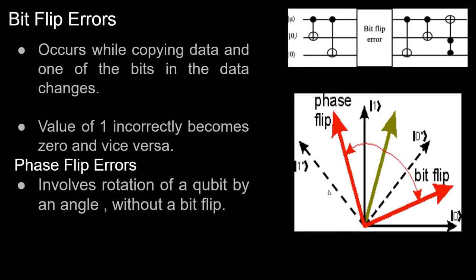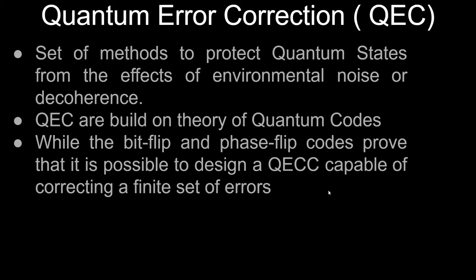The major limitation of my project is that it only works for single qubit errors in single qubit circuits, not multiple qubits. For single qubit circuits, my project can solve both bit flip and phase flip errors. Quantum error correction (QEC) is a set of methods to protect quantum states from environmental noise and decoherence, keeping qubits in their quantum nature. QEC is built on the theory of quantum codes and is capable of correcting a finite set of errors.